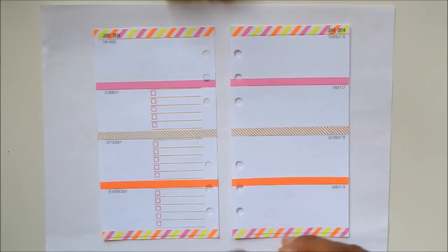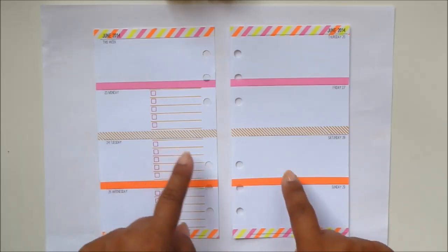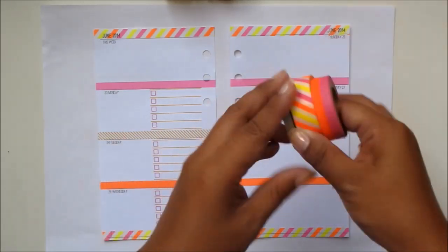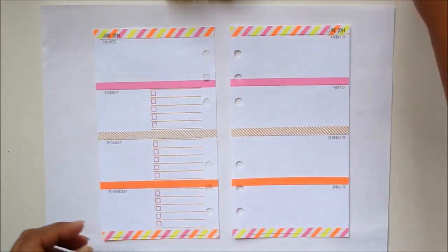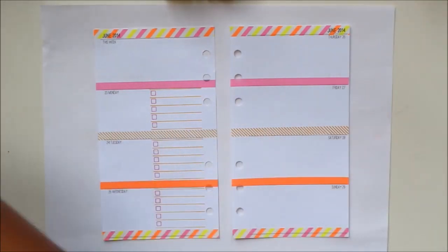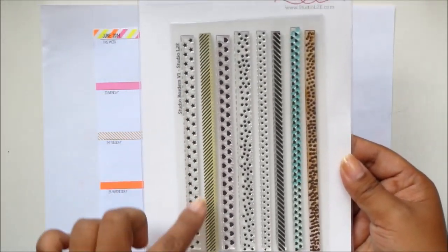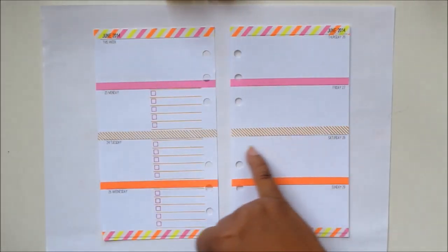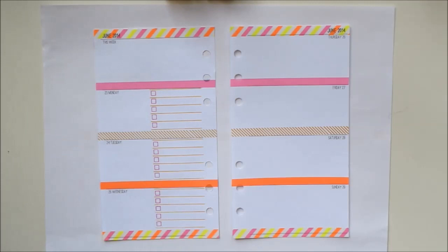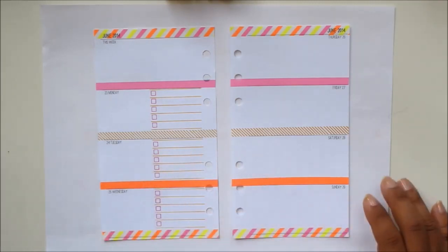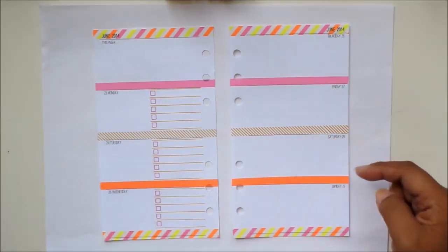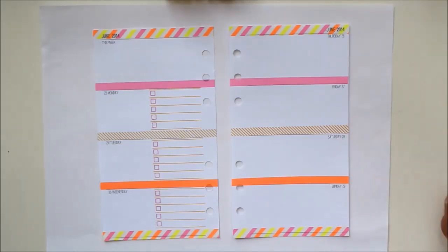Instead of putting that silver washi tape that I used in the A5 in the middle, I used the Studio L2E border stamp set, which I also used in the A5 pages. I used this diagonal stripe in the middle of the page, so you can see how I can use those border stamps to decorate the page instead of my washi tape.